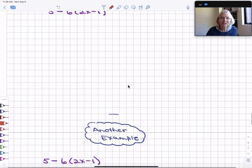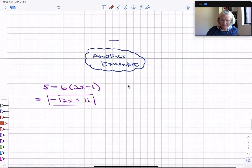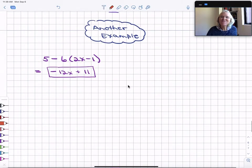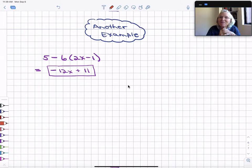Welcome back. Let's scroll down and see the fully simplified version. There it is. All right, so we get negative 12x plus 11.